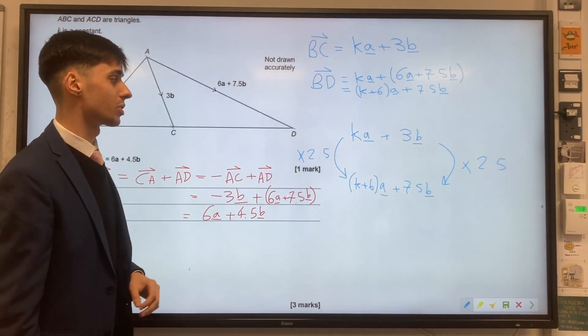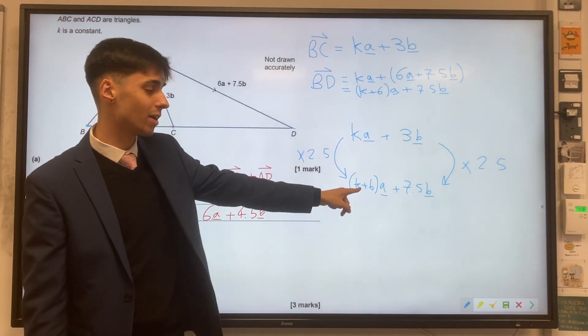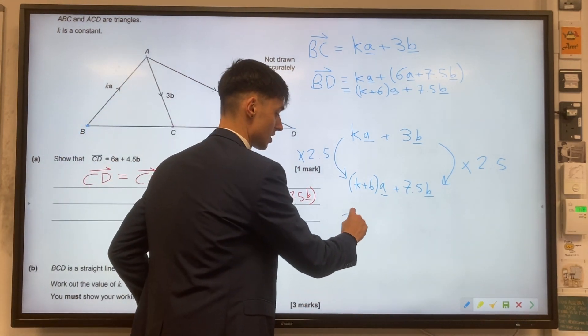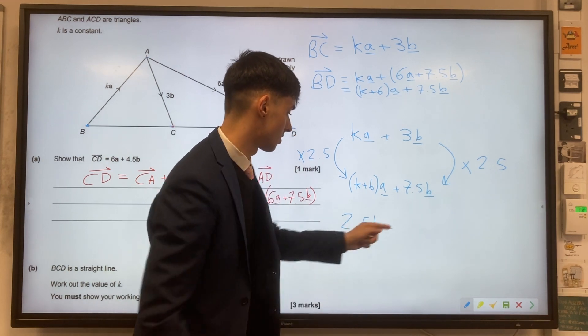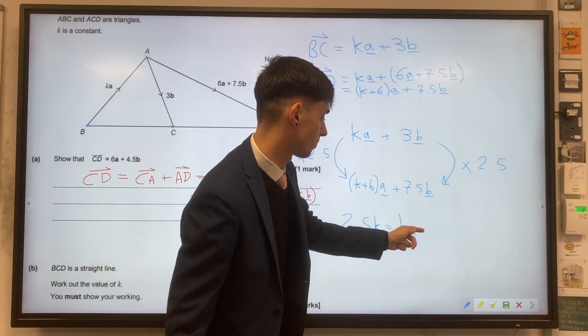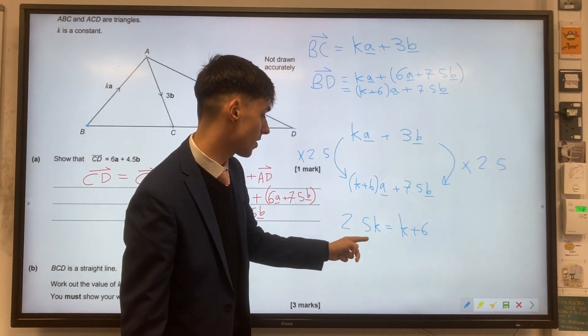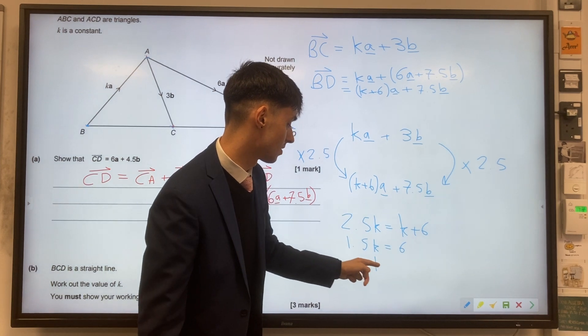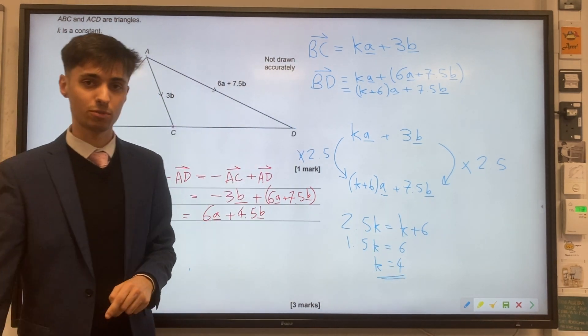And this gives us the clue to the question because it's telling us that K times 2.5 is K plus 6. So 2.5K equals K plus 6. And solving to find K, we need to take away K from both sides. So we should get 1.5K is 6, dividing by 1.5 to get K equals 4.